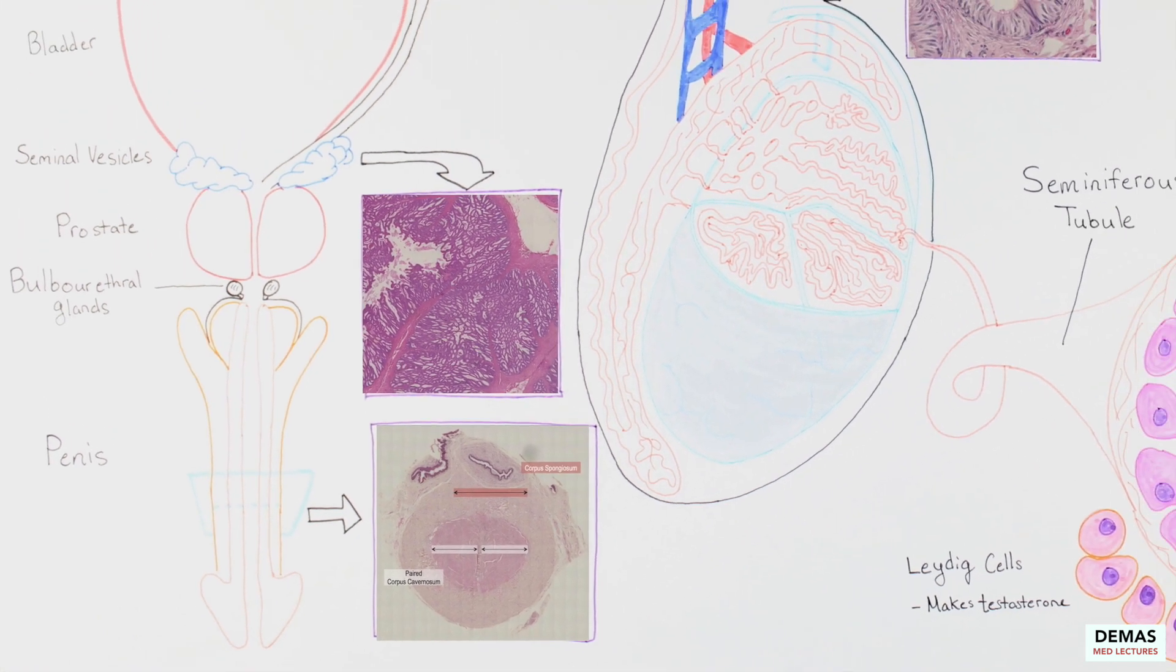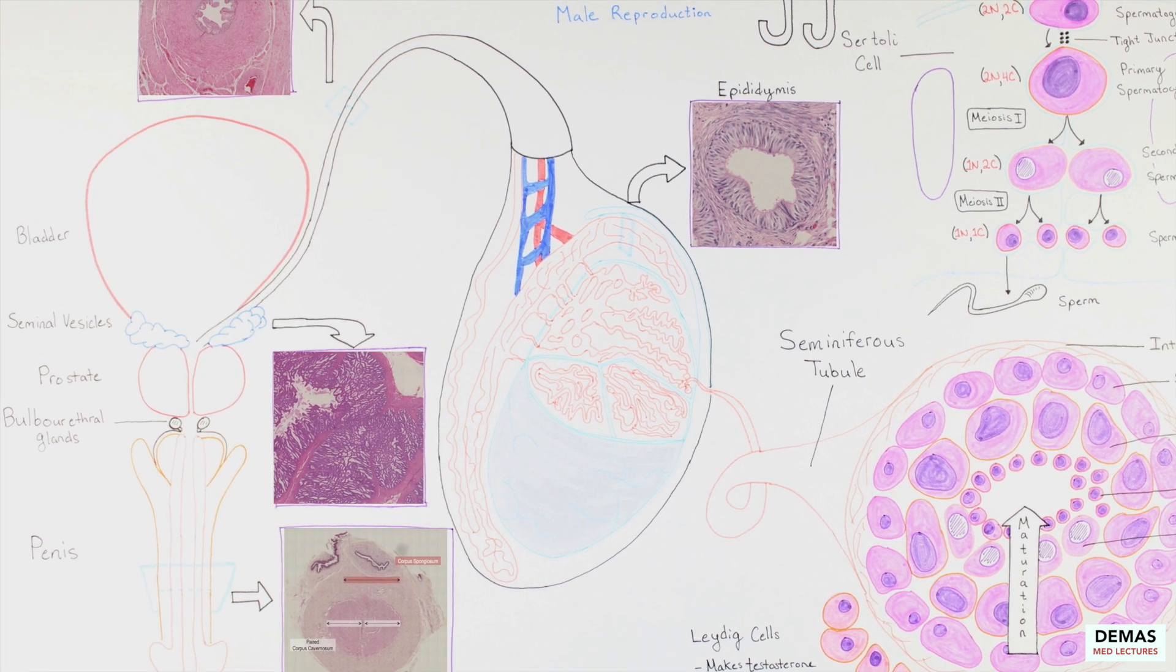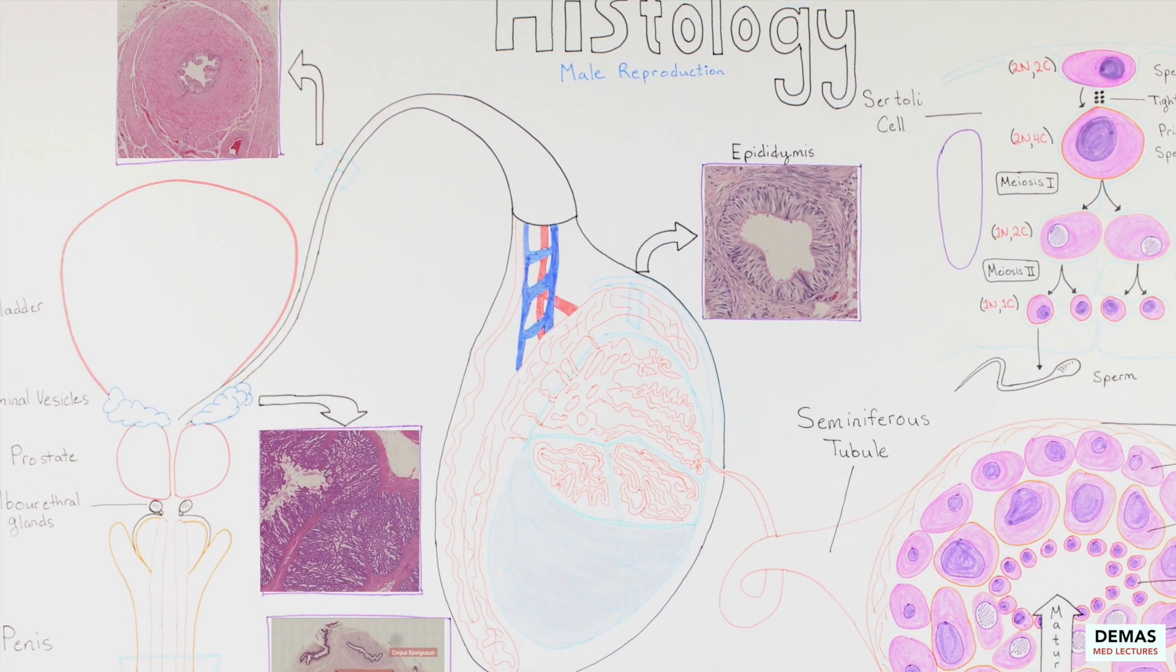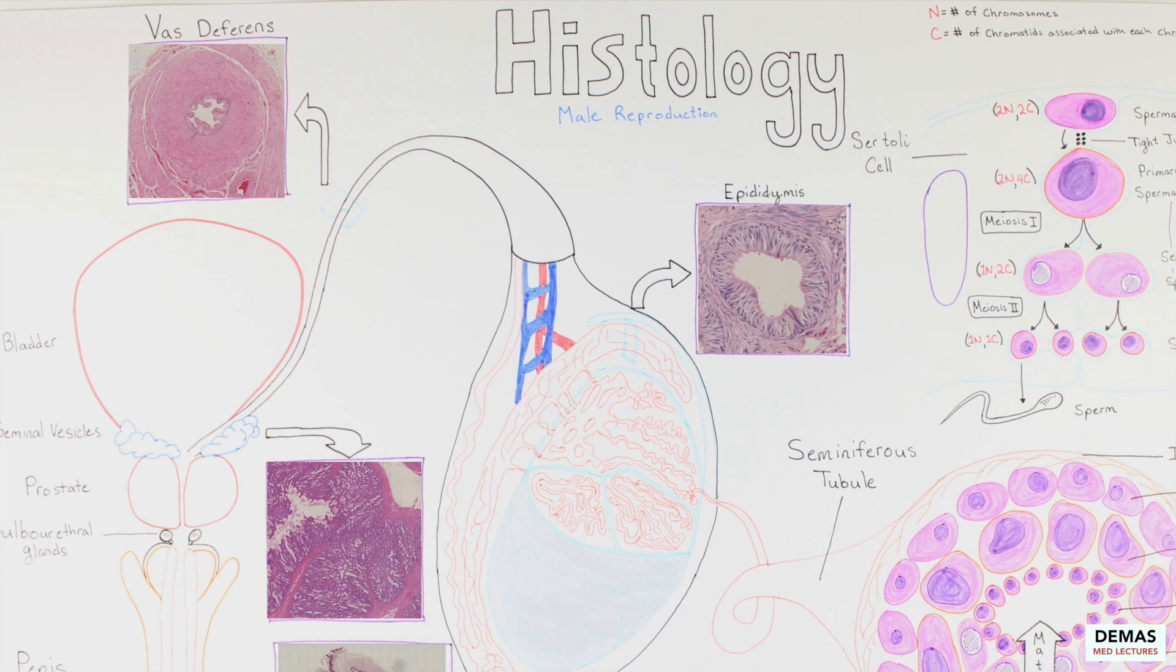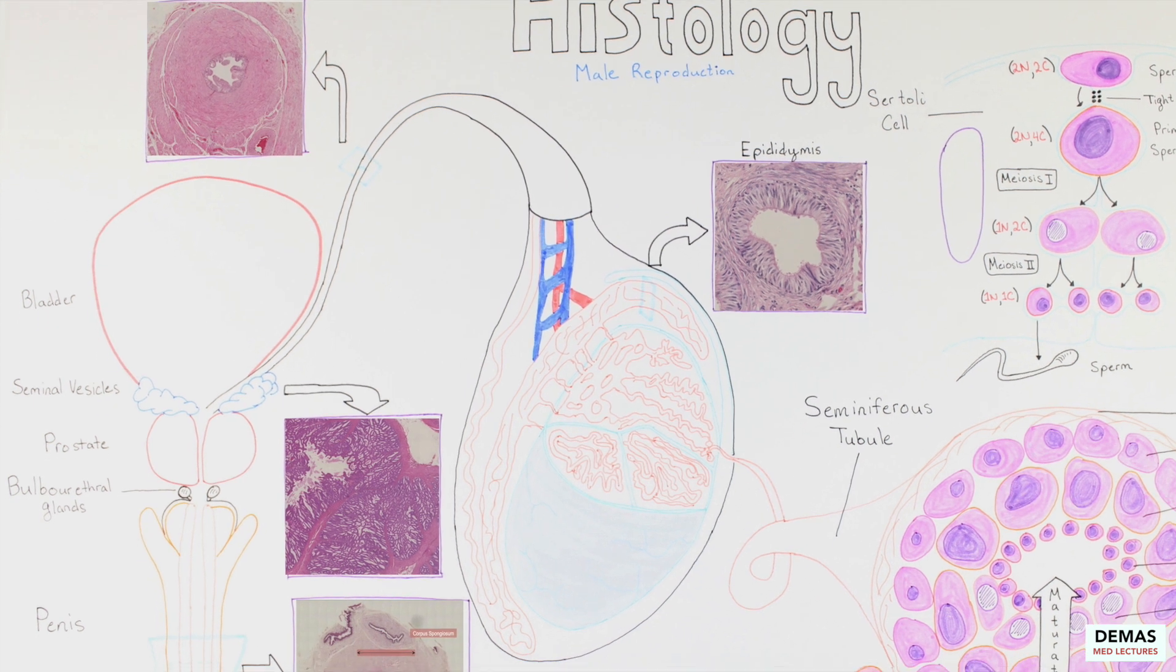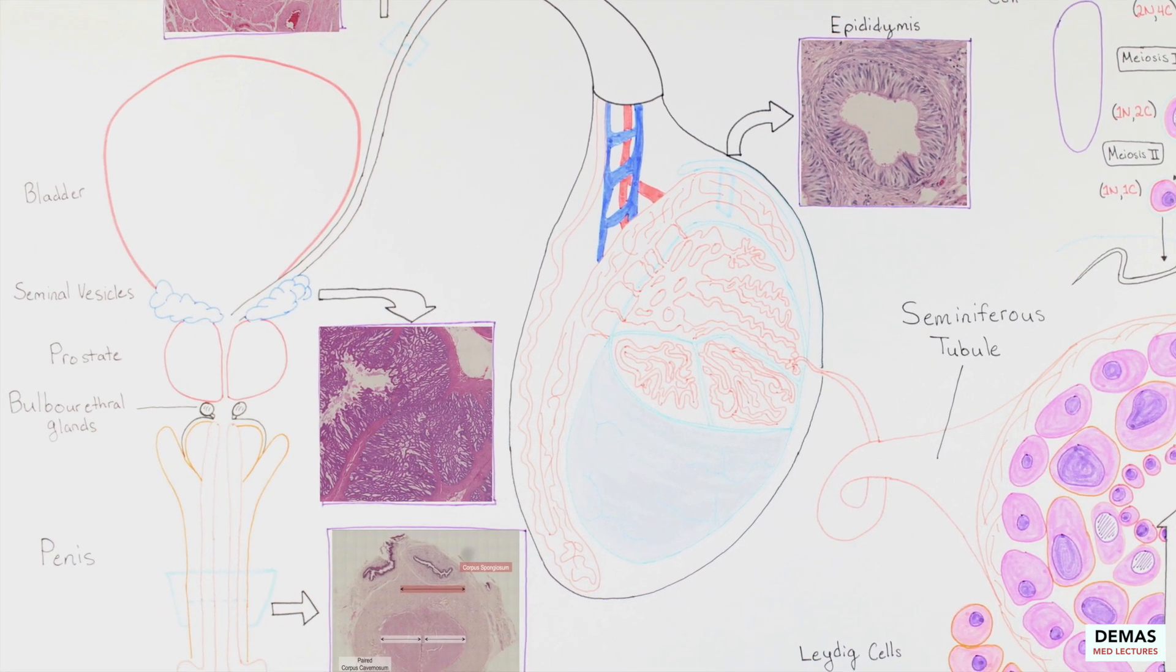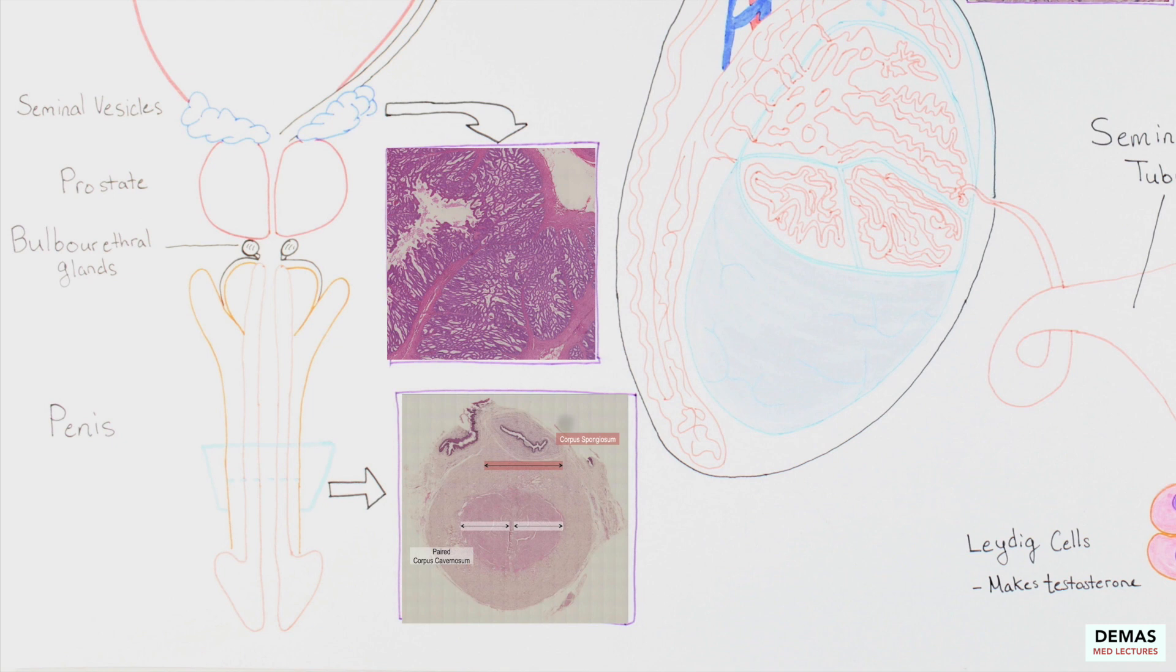Lastly, make sure to review the histology of the cross sections highlighted throughout this lecture, such as the pseudostratified columnar epithelium with stereocilia located within the epididymis and vas deferens, as well as the columnar epithelium of the seminal vesicles. Remember how the vas deferens contains a prominent layer of smooth muscle that assists with propelling sperm forward. Finally, make sure you are able to recognize key structures of the penis in cross-section, including the paired corpus cavernosum and the corpus spongiosum surrounding the penile urethra.